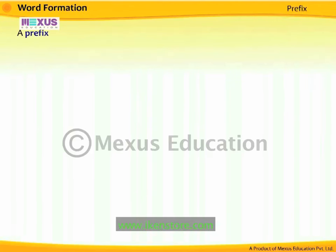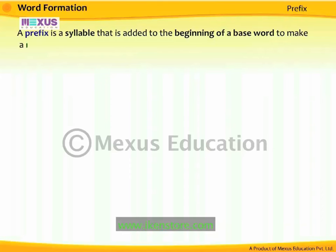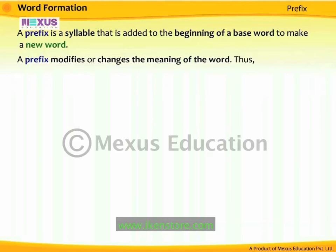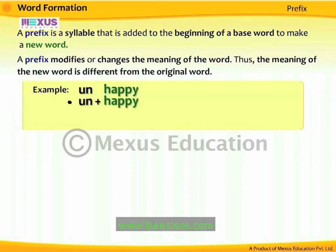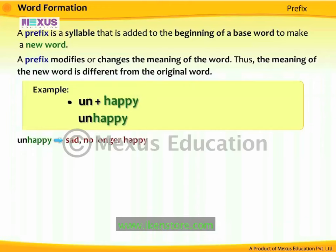A prefix is a syllable that is added to the beginning of a base word to make a new word. A prefix modifies or changes the meaning of the word; thus, the meaning of the new word is different from the original word. For example, the prefix 'un' plus 'happy' forms the new word 'unhappy,' which means sad or no longer happy.